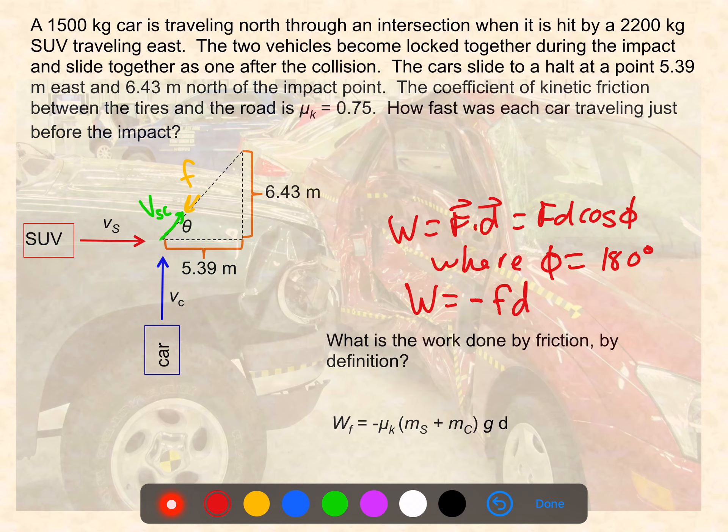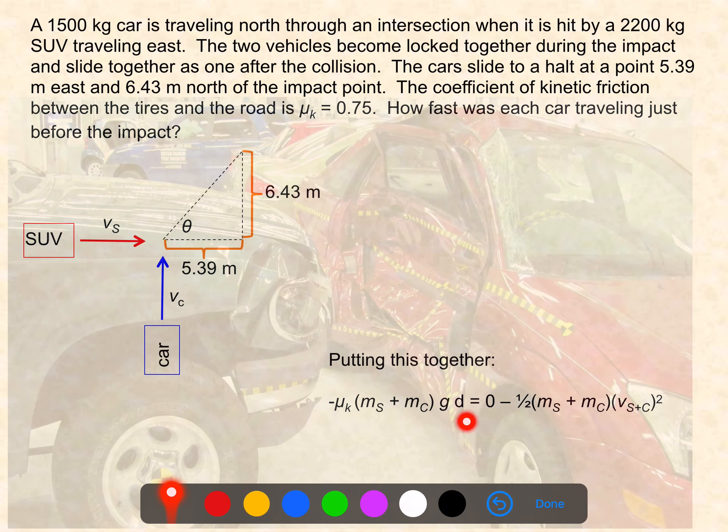Remember that the force of friction is mu times the normal force. Assuming that these cars are on a flat surface, the normal force should be balanced by their weight. So we have then that the work done by friction is going to equal negative mu k times the total mass times g, that's the weight, times the distance. We have two expressions for the work that's been done by friction, so we can set these equal to one another. Here's the definition of work. Here's what we found through the work kinetic energy theorem. When we simplify this expression, we get the following.